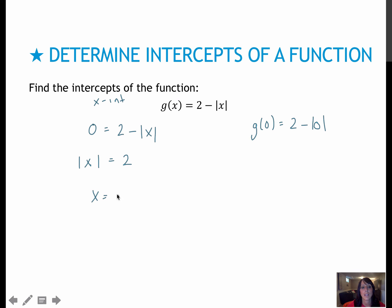Which means x would be either negative 2 or positive 2, because if I plugged in negative 2, the absolute value makes it positive. If I plug in positive 2, the absolute value makes it positive. So my intercepts are negative 2 comma 0 and 2 comma 0. For my y-intercepts, I would take 2 minus the absolute value of 0, which is 0, and get 2. So my y-intercept is 0 comma 2.